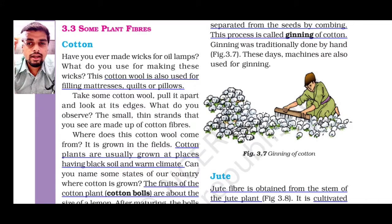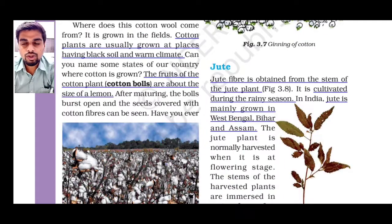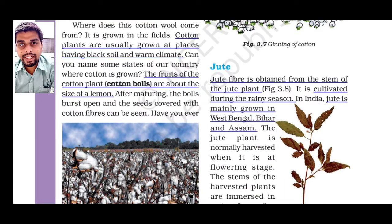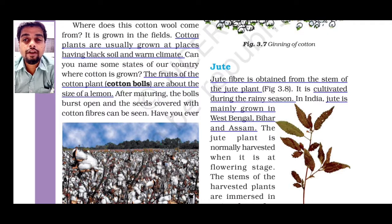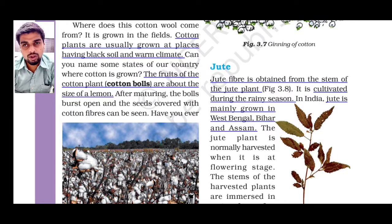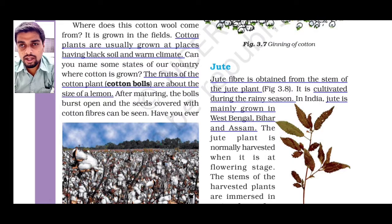These little strands are cotton fiber. So where does this cotton wool come from, or where does it grow? It grows in large farms. The best suitable condition for growing a cotton plant is that the soil should be black and the climate should be warm.